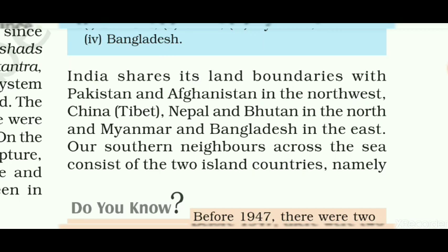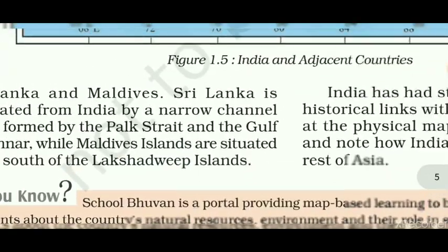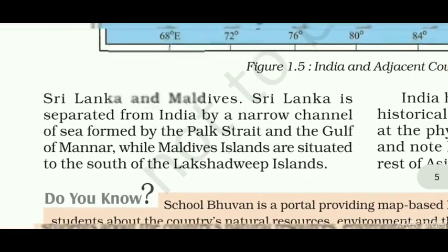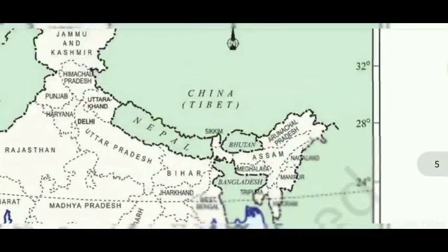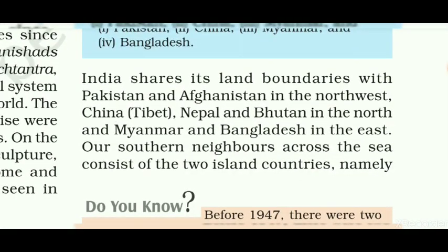The nations across the sea consist of two island countries, namely Sri Lanka and Maldives. In these lines, the location of India's neighboring countries is mentioned.